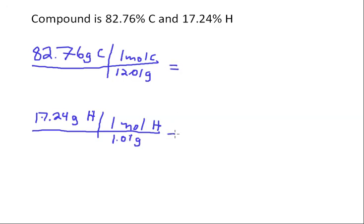This will allow us to calculate the number of moles for each element present in this compound. 82.76 divided by 12.01 works out to be 6.89. Remember, this is moles of carbon.